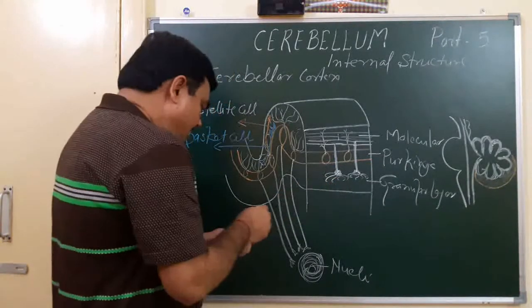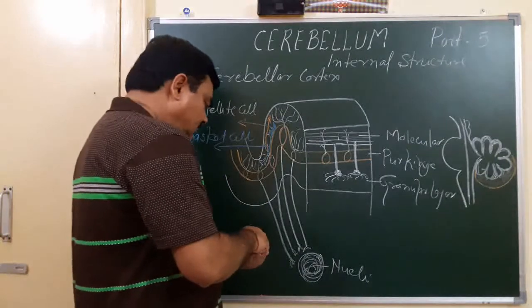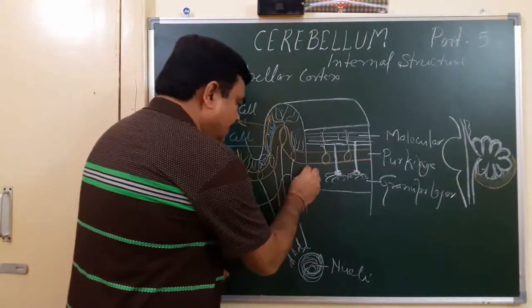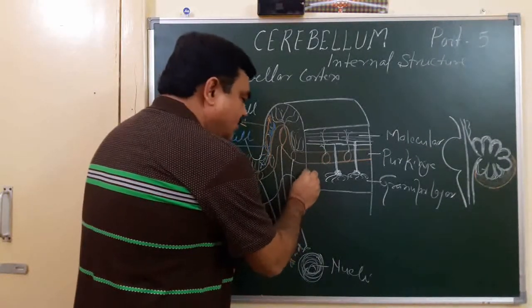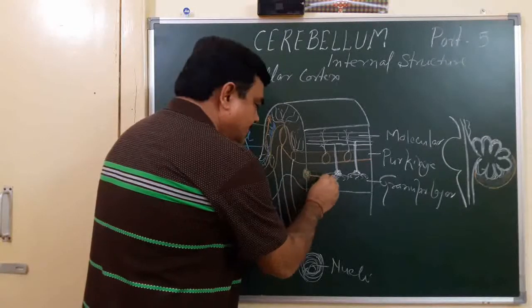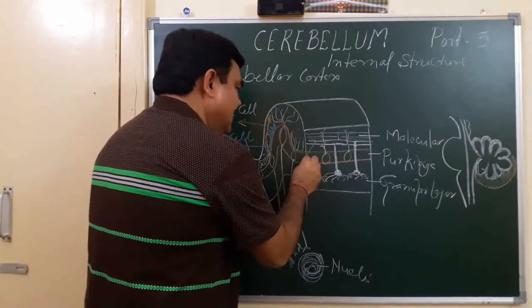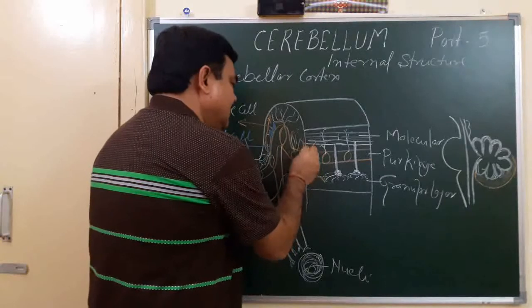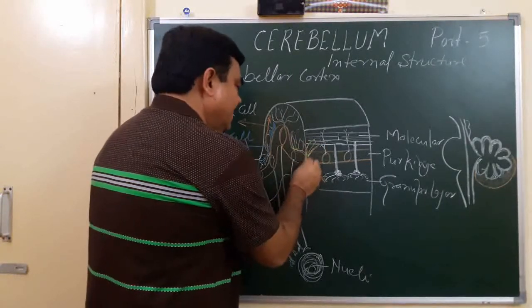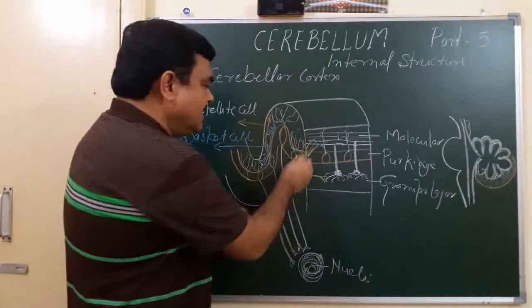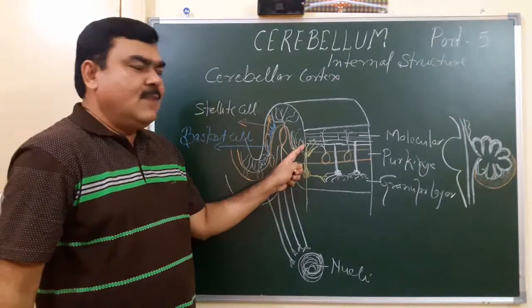In the granular layer, another cell is also present — the Golgi cell. Here is the axon of the Golgi cell and here are the dendrites of the Golgi cell. These dendrites also extend into the molecular layer.